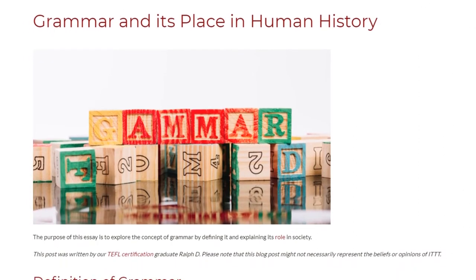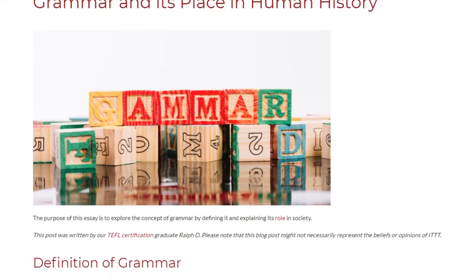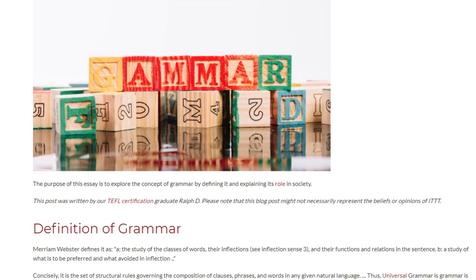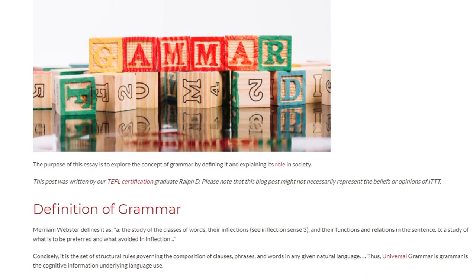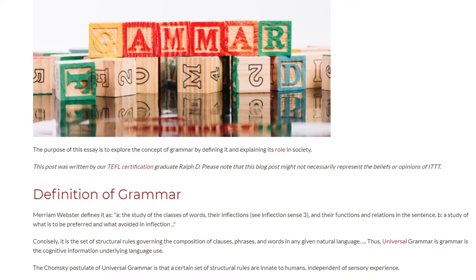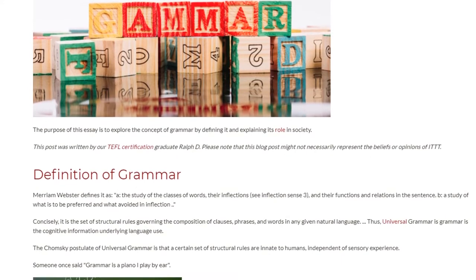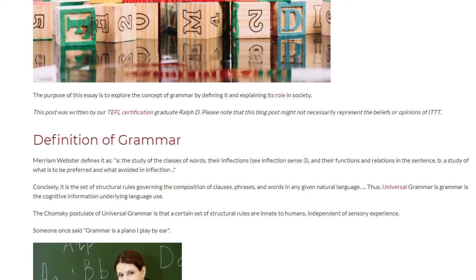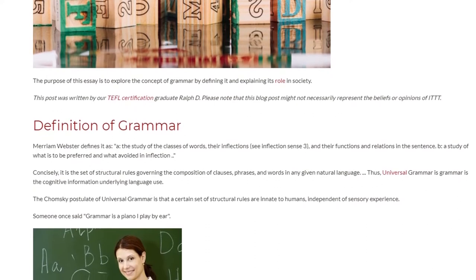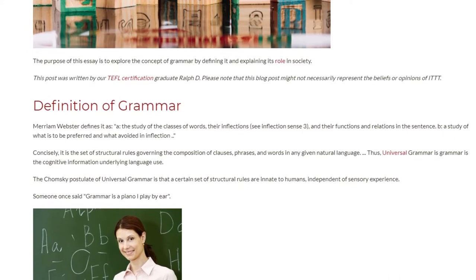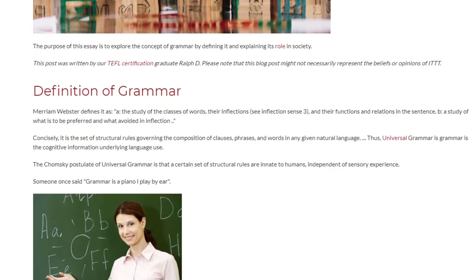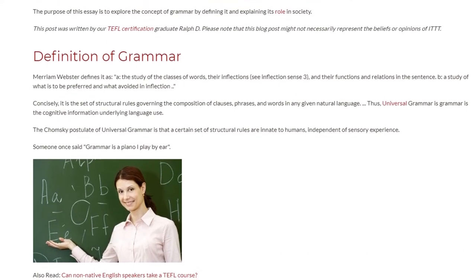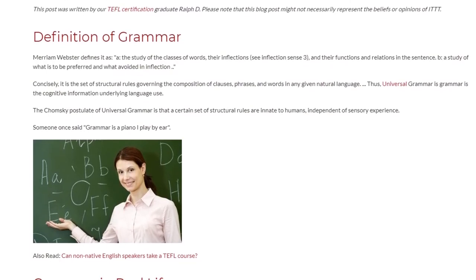Grammar and its place in human history. The purpose of this essay is to explore the concept of grammar by defining it and explaining its role in society. Merriam-Webster defines grammar as the study of the classes of words, their inflections, and their functions and relations in the sentence. Concisely, it is the set of structural rules governing the composition of clauses, phrases, and words in any given natural language. Universal grammar is the cognitive information underlying language use. The Chomsky postulate of universal grammar is that a certain set of structural rules are innate to humans, independent of sensory experience.